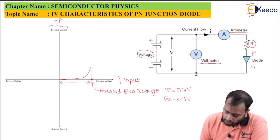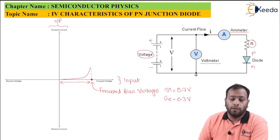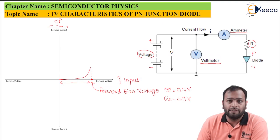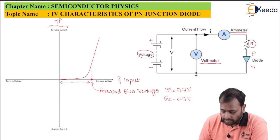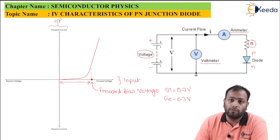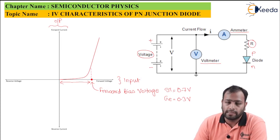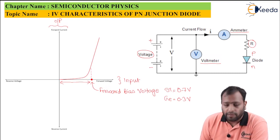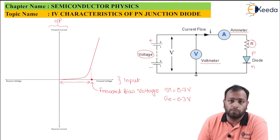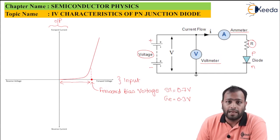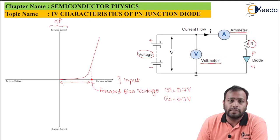Beyond the forward bias voltage, the diode starts behaving as an ohmic device. An ohmic device is one in which the current and voltage relationship is almost linear, so the graph becomes a straight line. This is why the graph is broken in the center. Beyond the forward bias voltage point, the diode conducts and the I-V relationship follows Ohm's law, where voltage is proportional to current.